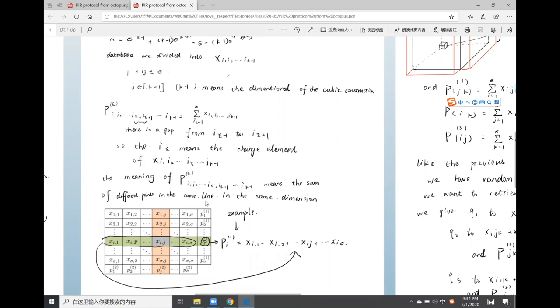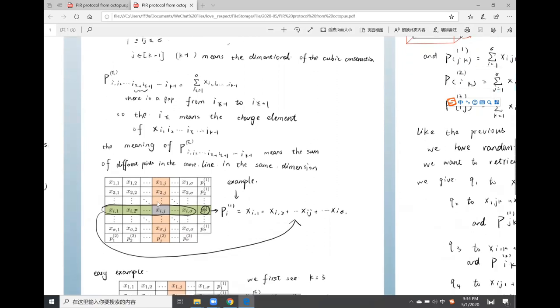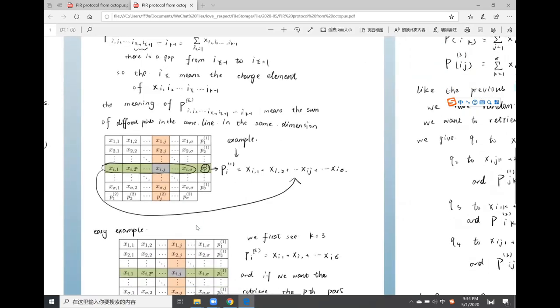The meaning of P is the sum of different points in the same line in the same dimension. Maybe this is a little hard to understand.